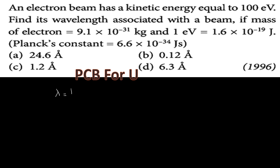The electron beam has a kinetic energy of 100 electron volts. The formula for the de Broglie wavelength is λ = h / √(2mE).